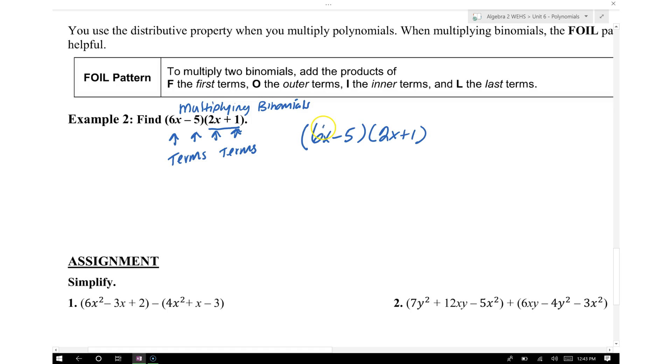The first term is 6x, so we're going to multiply 6x times 2x. So 6 times 2 gives us 12, and we have x times x which gives us x squared. So that's the first term. The outer terms, the O in the FOIL method, is 6x times 1, so we write plus 6x.